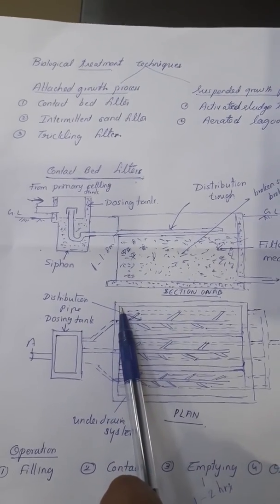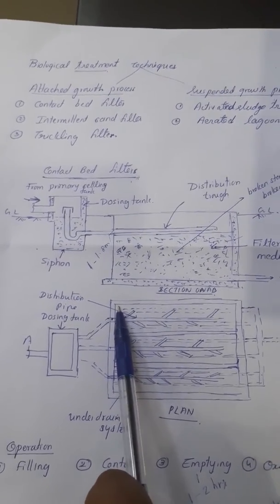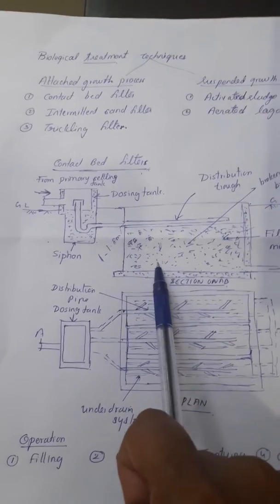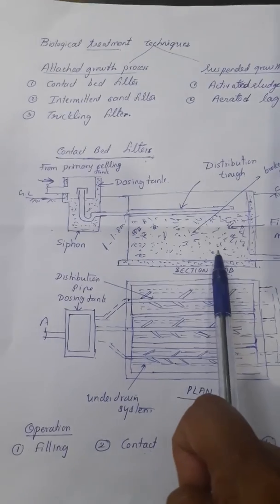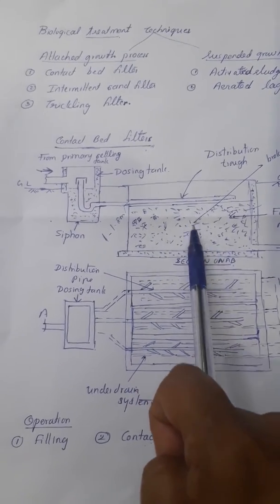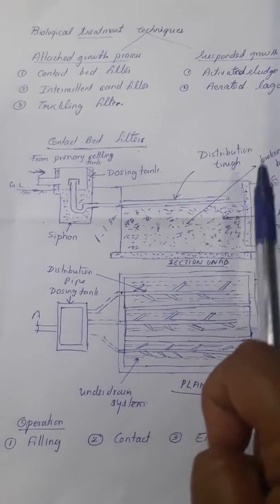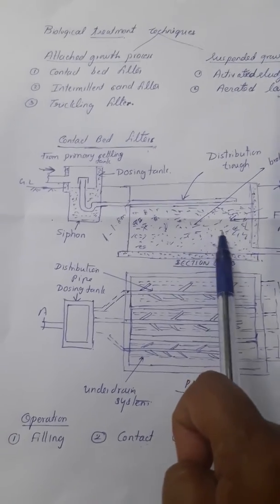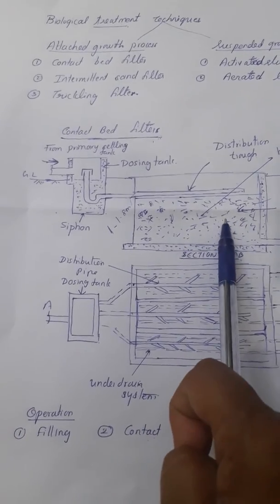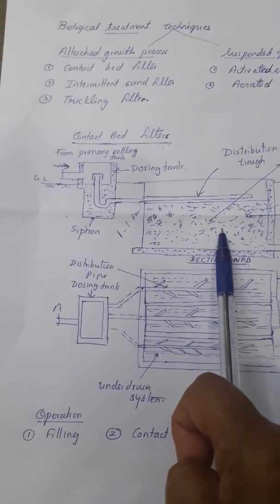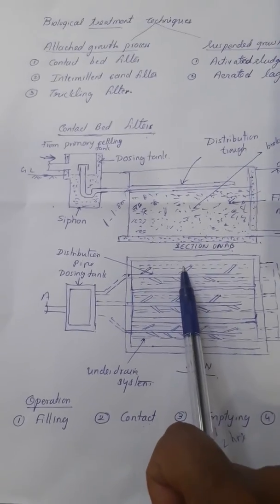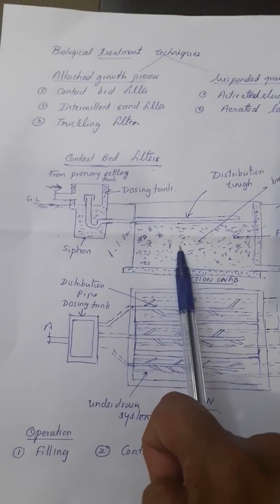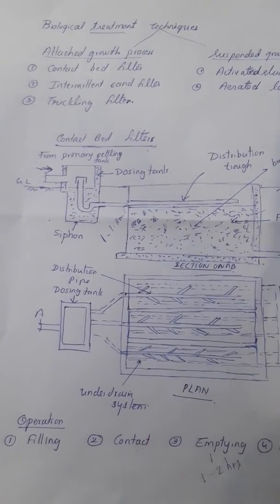The disadvantages of this filter: the rate of loading is very less compared to trickling filter, and large area of land is required for installation. The operation is not continuous, it is intermittent, so continuous attention is required. Another disadvantage is that the cost of contact bed is more compared to trickling filter. These are the advantages and disadvantages of the contact bed filter.